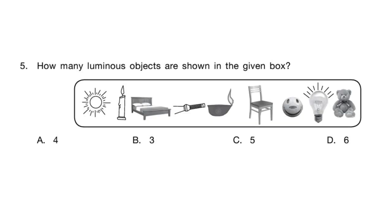Question 5: How many luminous objects are shown in the given box? The correct answer is option C — 5.